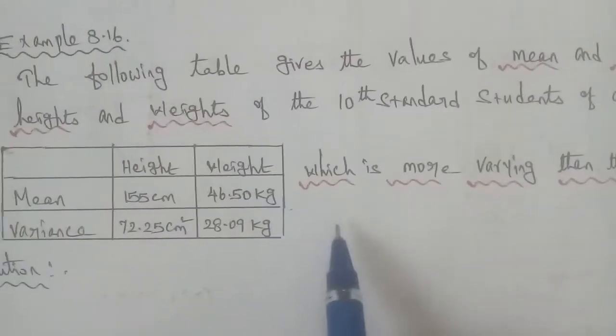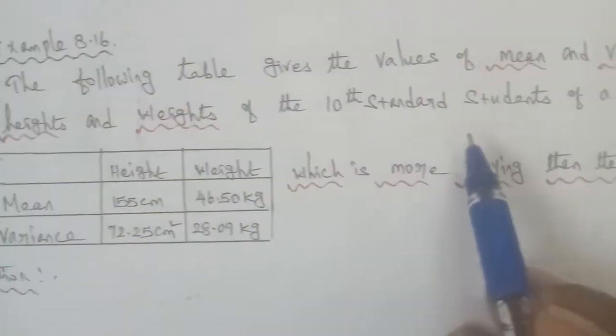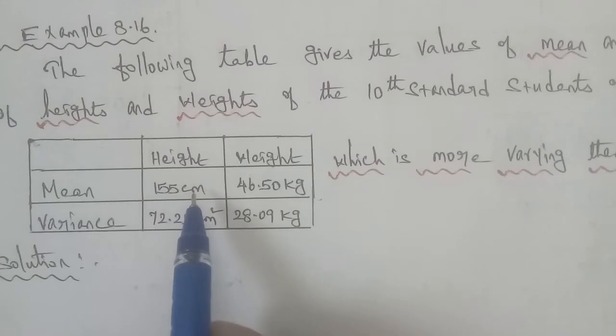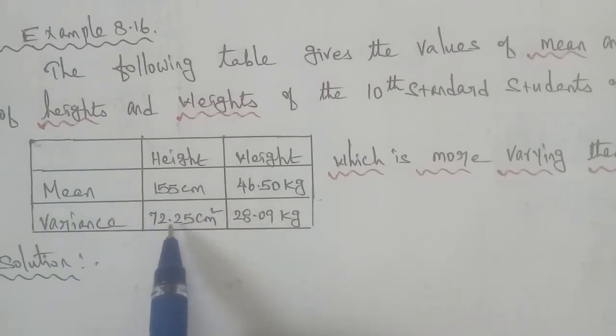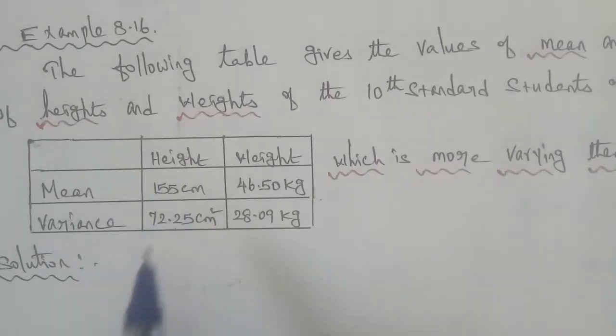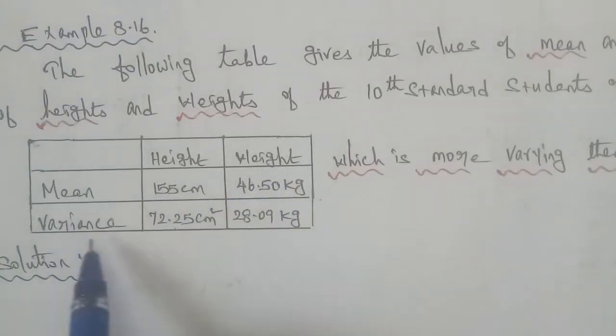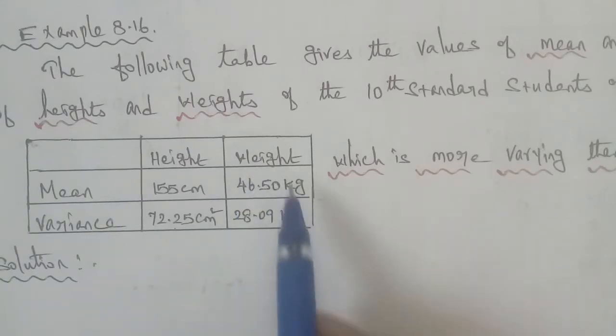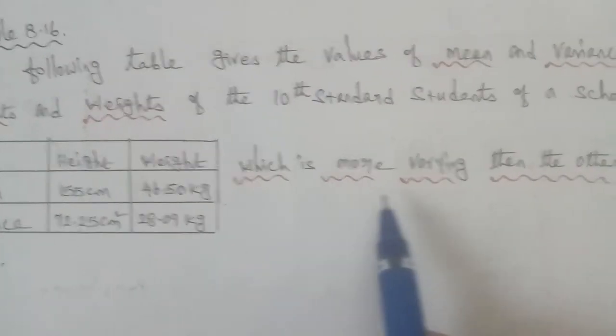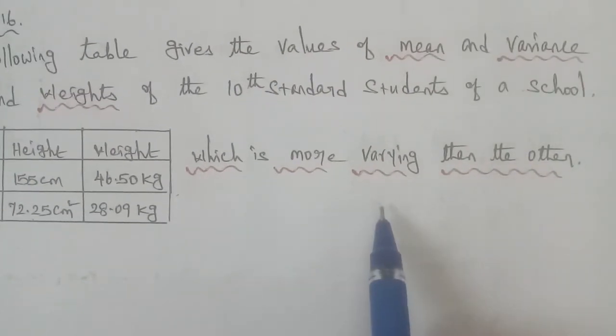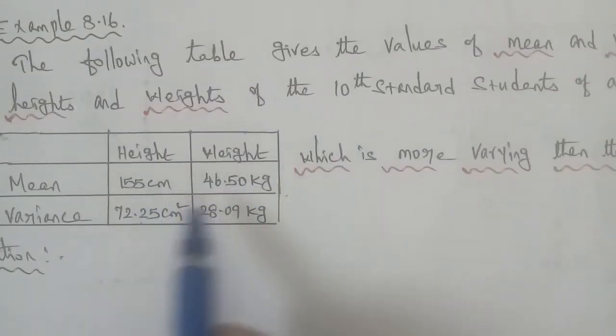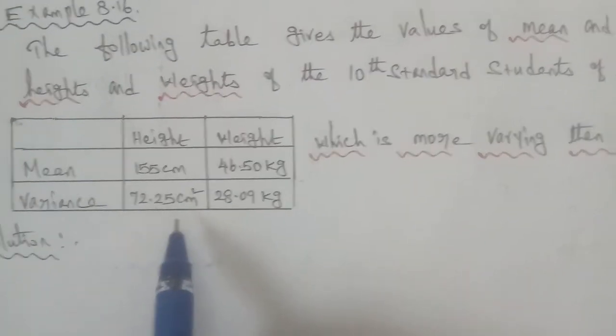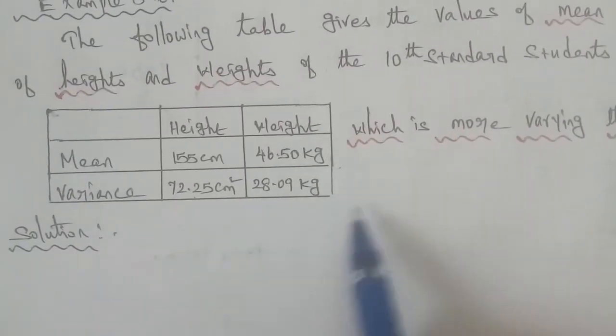So, in the table, 10th standard students, height to weight, mean and variance is 155 cm. The variance is 72.25 cm squared, height is mean and variance. Weight mean and variance is 46.50 kg, variance is 28.09 kg. This is more varying than other. Which is more consistent? So, if we look at the coefficient of variation formula, we apply the coefficient of variation.